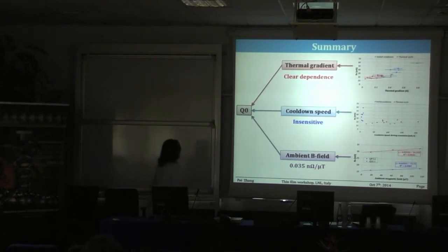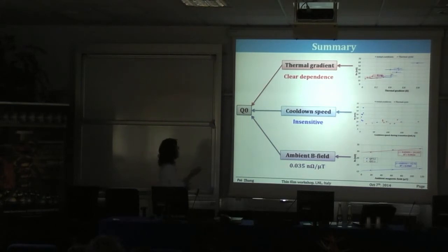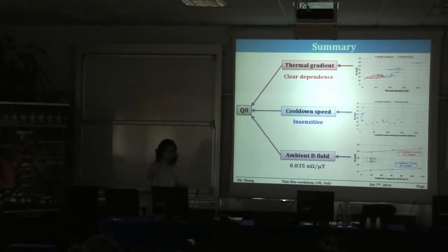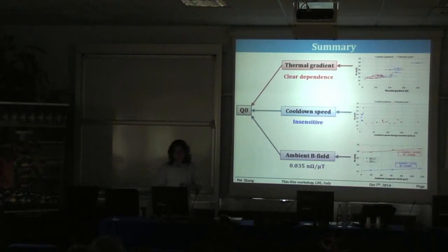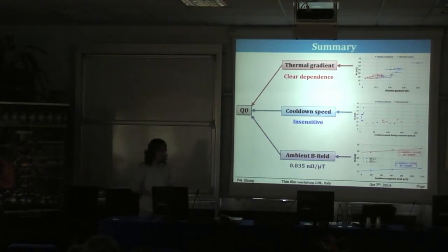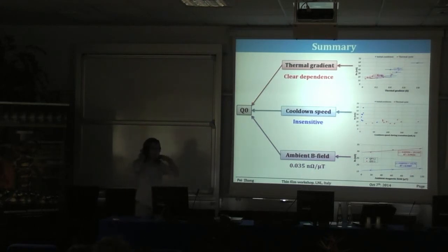To summarize: there are several factors that affect Q0. First, the thermal gradient — we see a clear dependence in our QWR niobium-coated cavity; a larger thermal gradient during the transition gives worse performance. Second, the cool-down speed — in our case, not sensitive, even with a 20× variation in speed. Third, the ambient magnetic field — also not so sensitive, which is why we decided to go with no compensation or shielding for the cryomodule.